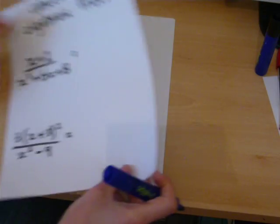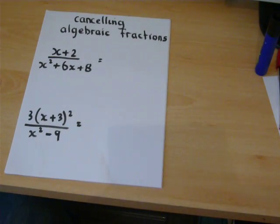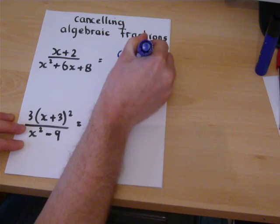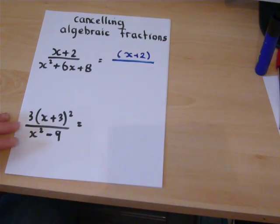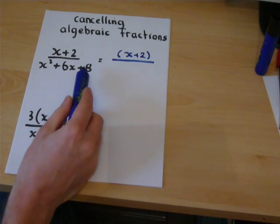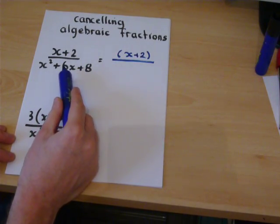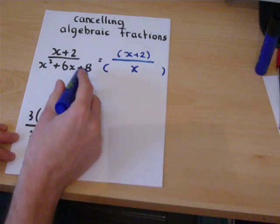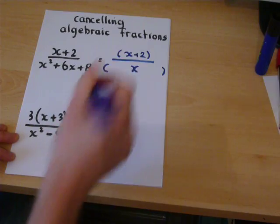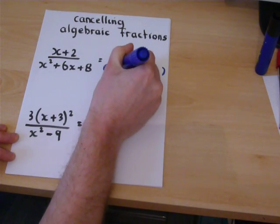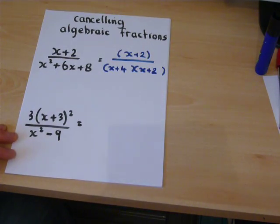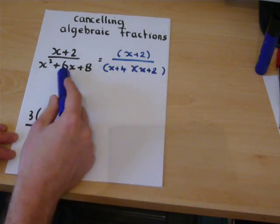Now, one application of this is called algebraic fractions, where you try to factorise the things in the expression. So, if we have an eight and a six, we need to have two numbers which times to make eight and add to make six. Well, four and two times to make eight, and four plus two is six.